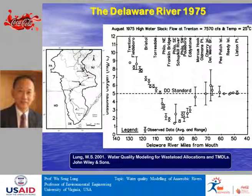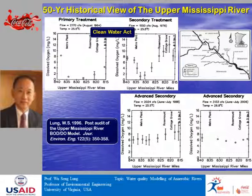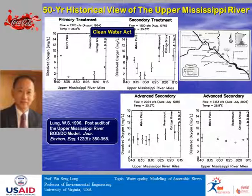Now let's take a look at a third example — the Mississippi River. We're talking about the upper Mississippi, not anywhere near the lower Mississippi like New Orleans or the mouth. The upper Mississippi River is located in the state of Minnesota.